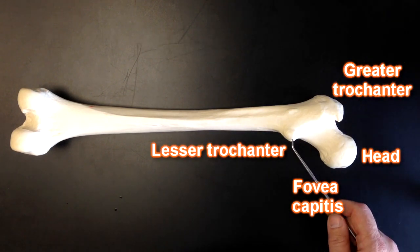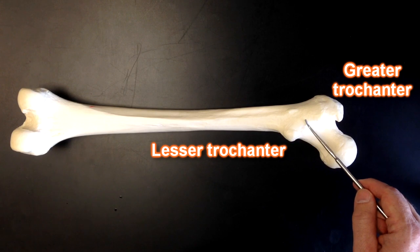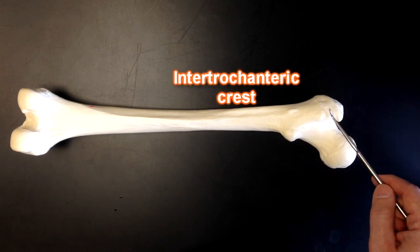We can see our greater and lesser trochanters and we can see this crest in between the trochanters. That's called the intertrochanteric crest.